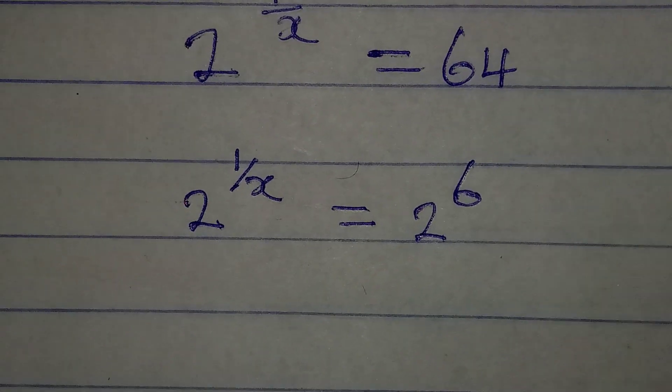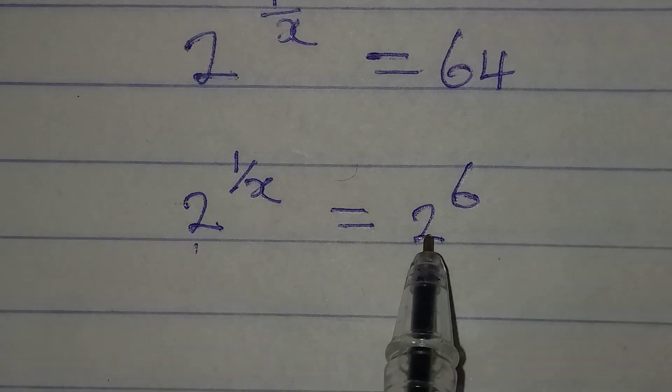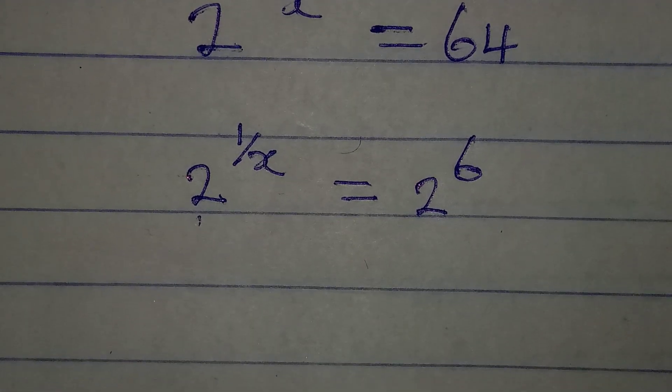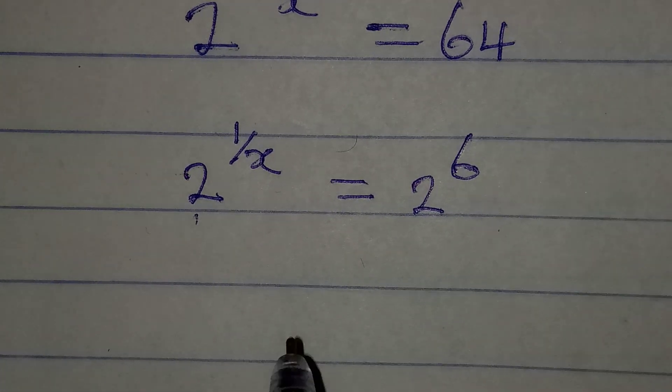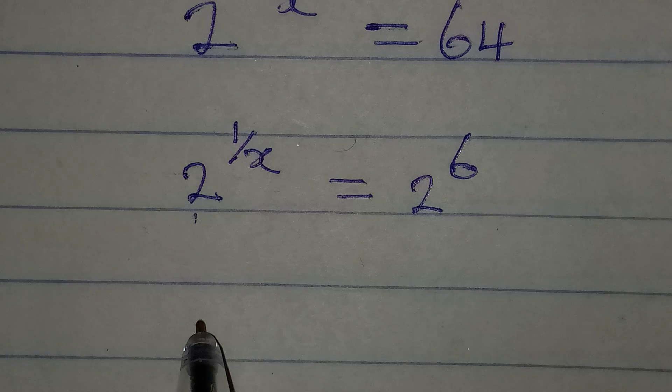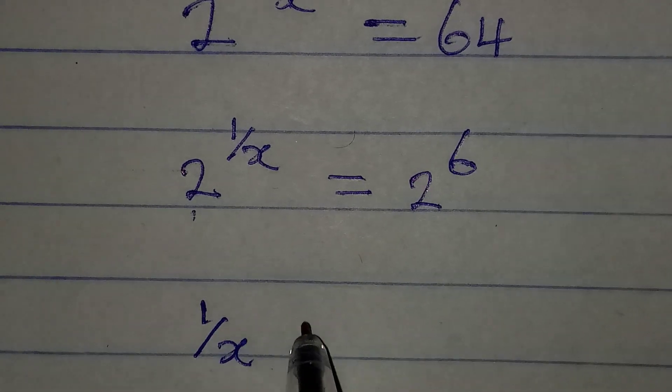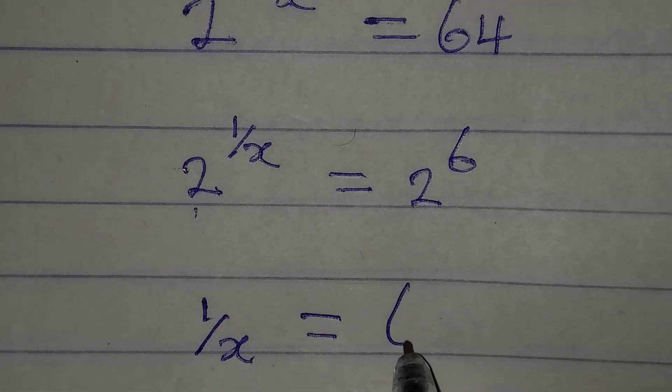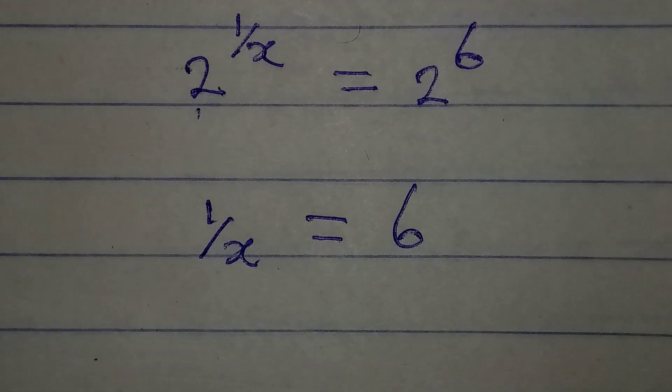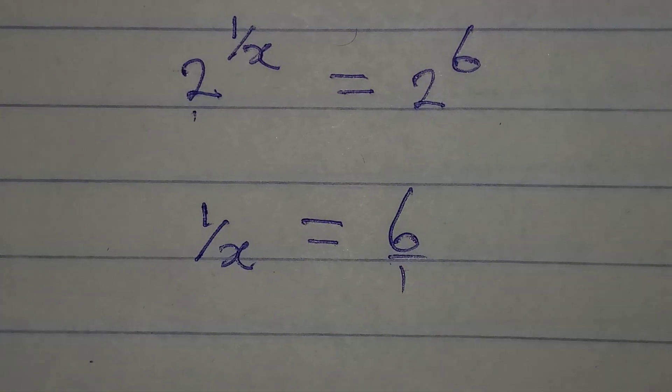Now if the bases are the same, the powers must be the same, right? So I will say that 1 over x should be the same thing as 6, and now this 6 is also over 1, right?